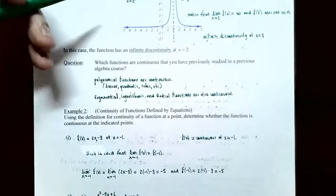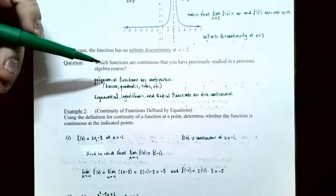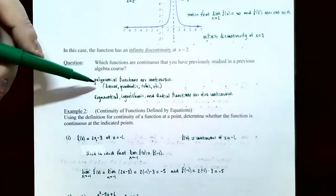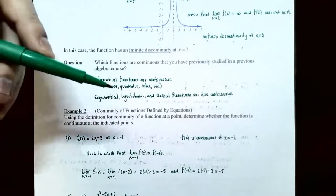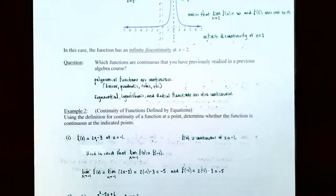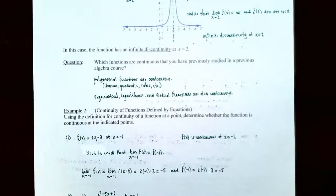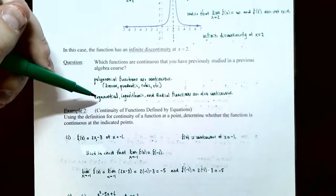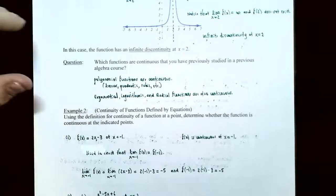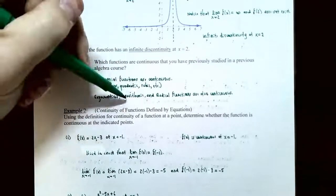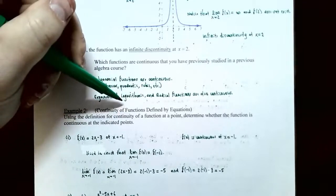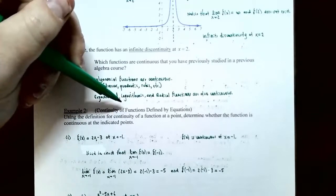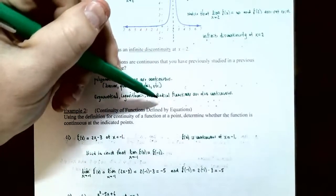Which functions you have seen in the past are continuous? Polynomial functions — linear, quadratic, cubic, quartic — are continuous for all real numbers. Exponential functions are continuous from negative infinity to infinity. Logarithmic functions, including log and natural log, are continuous on their domain. Radical functions are also continuous on their domain.